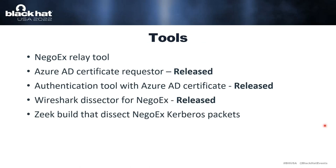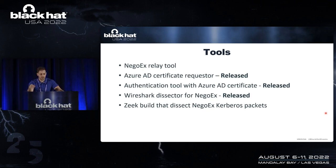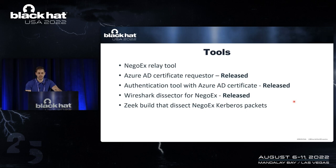The tools used are: the NegoX Relay tool just demoed, the Azure AD Certificate Request tool (PRT to certificate), and the Pass-the-Certificate authentication tool with Azure AD certificates. For research, I modified Wireshark to add a PKU2U dissector for NegoX messages, and modified Zeek to parse GSS-API NegoX to extract PKU2U messages, serial numbers, and certificate details. All tools are available on GitHub.